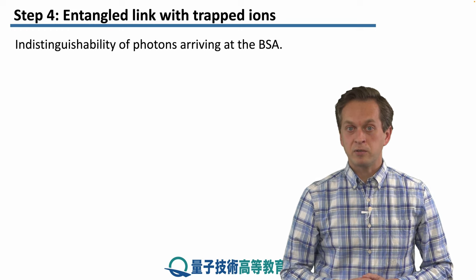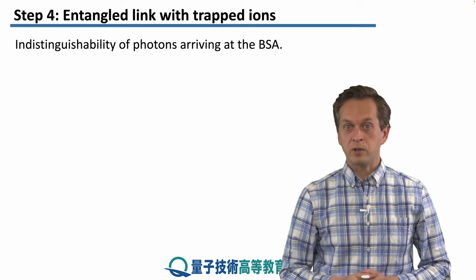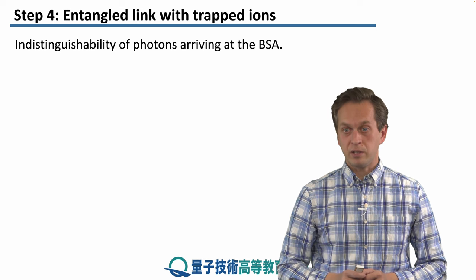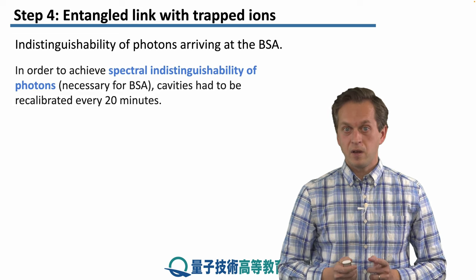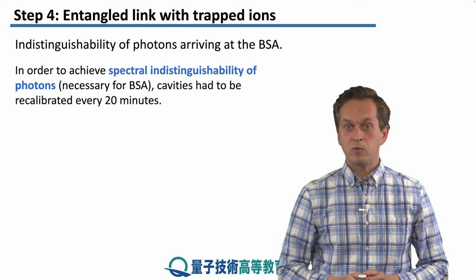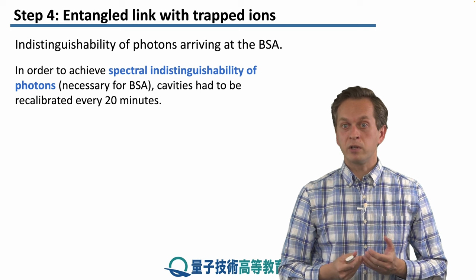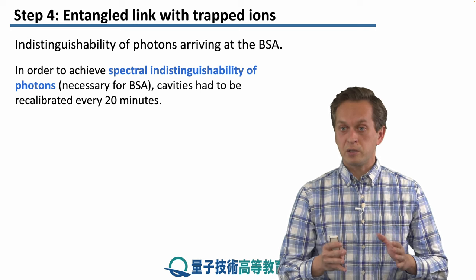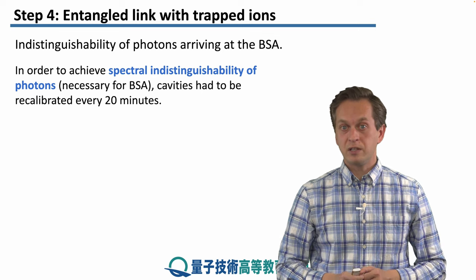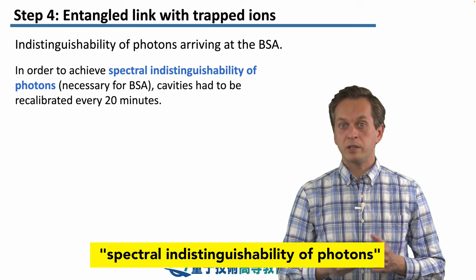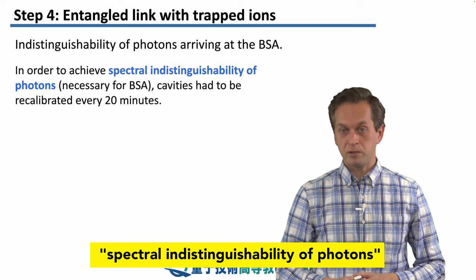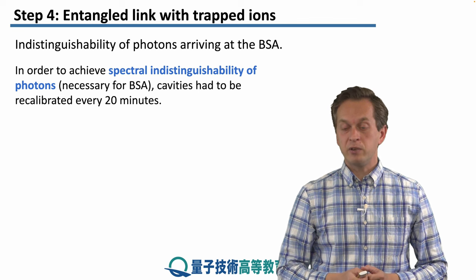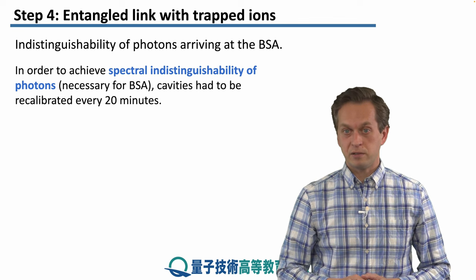What the experimentalists had to ensure was the indistinguishability of photons arriving at the BSA. One important consideration was checking the spectrum of the emitted photons — this is known as spectral indistinguishability of photons. In order to achieve this, the cavities had to be recalibrated every 20 minutes.